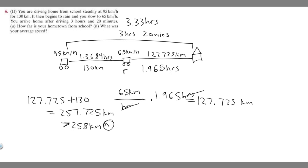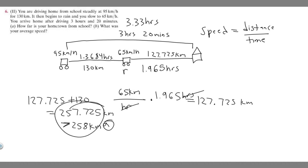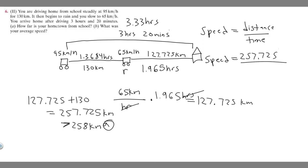Now let's move on to Part B: what was your average speed? Speed equals distance over time. We know the distance is 257.725 kilometers — using the more exact value — and the total time was 3.33 hours. So speed equals 257.725 divided by 3.33, which gives approximately 77.3948 kilometers per hour.